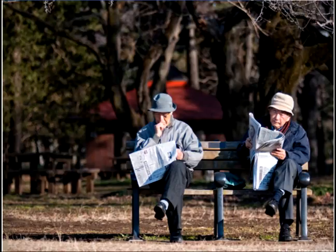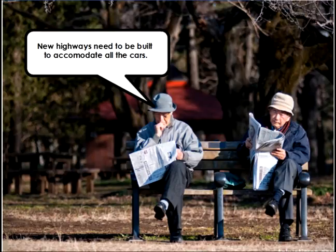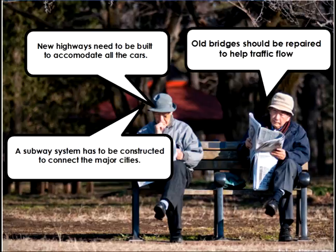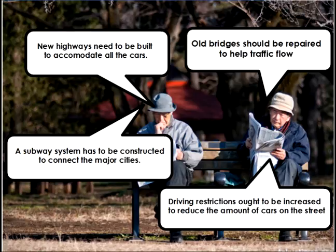Let's look at the grammar for today. This man says to himself, 'New highways need to be built to accommodate all the cars,' and 'A subway system has to be constructed to connect the major cities.' The other man is thinking, 'Old bridges should be repaired to help traffic flow,' and 'Driving restrictions ought to be increased to reduce the amount of cars on the street.'